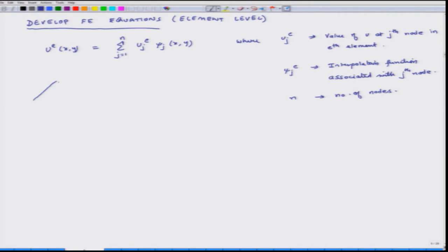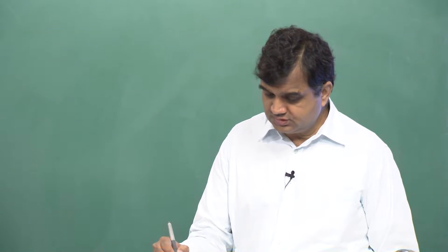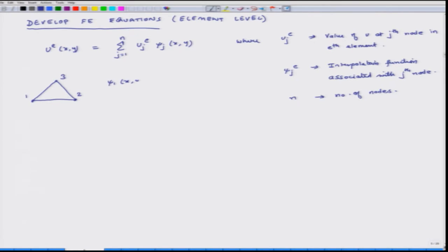If I have a triangle, I have three nodes: 1, 2, 3. How many interpolation functions will there be in this case? Three. So psi_1(x,y) will be the interpolation function associated with the first node, psi_2(x,y) will be the interpolation function associated with the second node, and psi_3(x,y) will be the interpolation function associated with the third node.